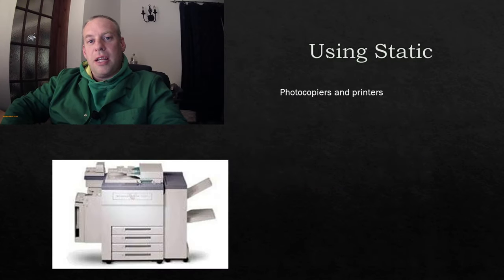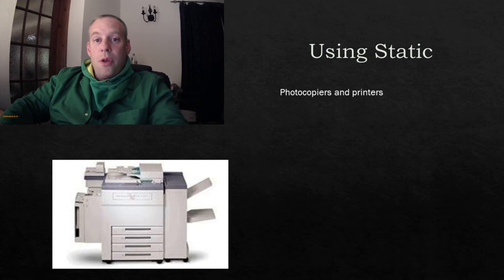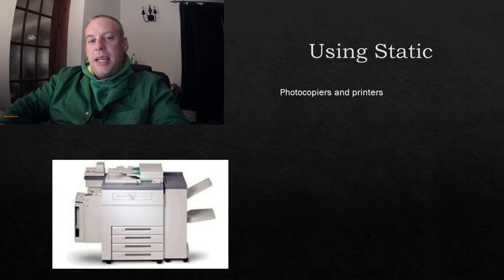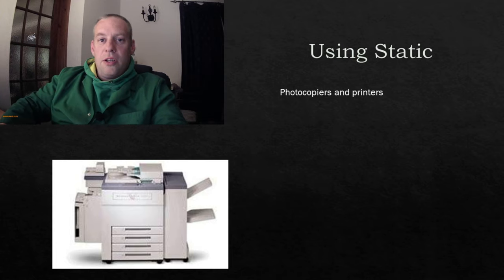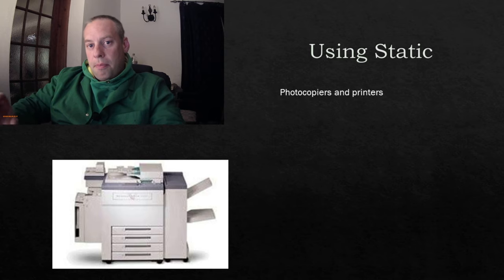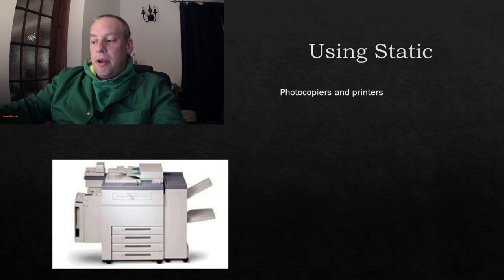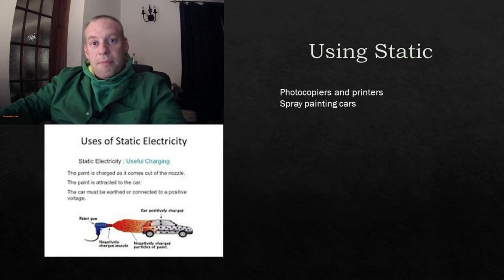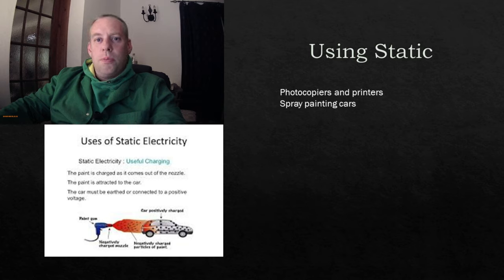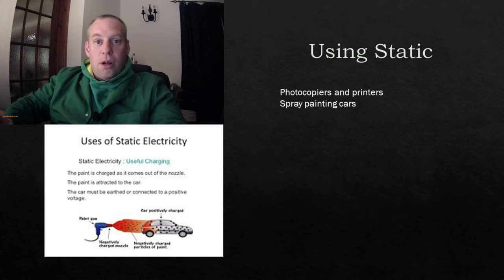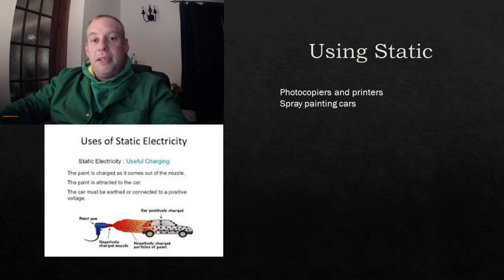Let's look at some industrial uses for static electricity. First, photocopiers: static electricity copies an image onto a roller; light shines on the roller and cancels out the positive charges, making those areas negative. The roller then goes through toner, which is negatively charged and sticks to the positive parts of the roller, then transfers onto the paper and is heat-bonded on. Second, spray painting cars: if your spray paint is water-based or slightly negatively charged, and you create a positive charge on the car's body, then when you spray the paint it is attracted to the metal and is less likely to go elsewhere — very clever.